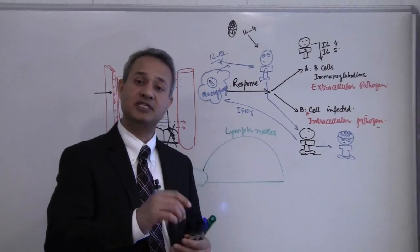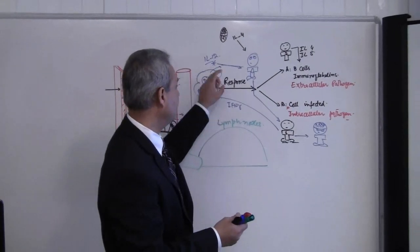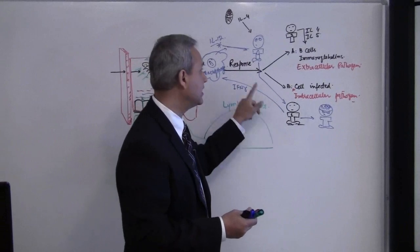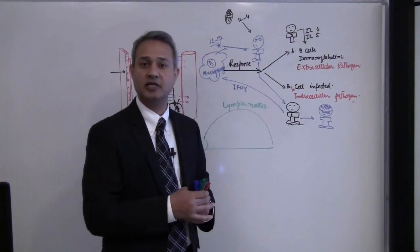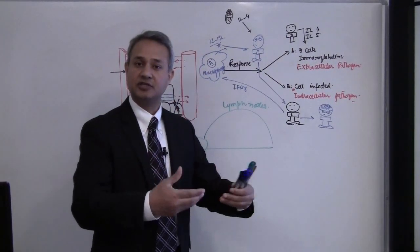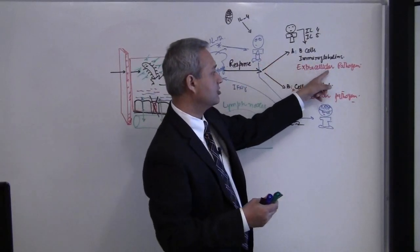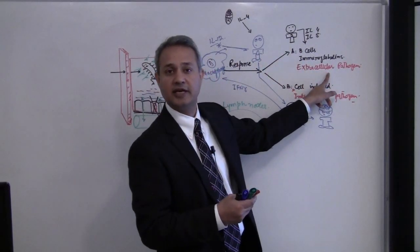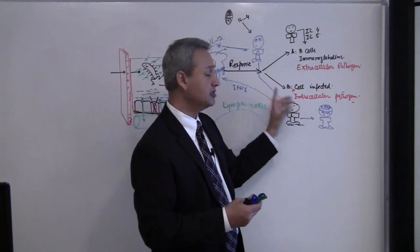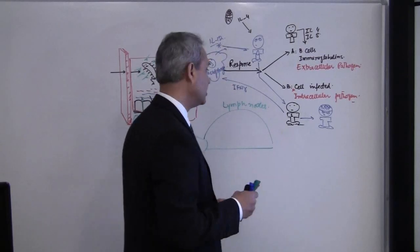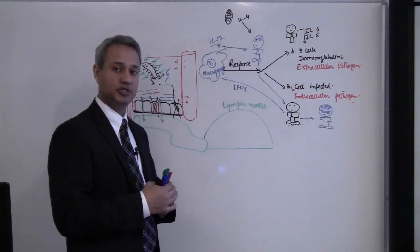Now what could be the mistake? The mistake could be that we want the helper 0 to go helper 1 path, but instead if it went helper 2 path, it is going to kill the reaction. Why? Because now if it goes helper 2 path, we are going to try to find the pathogen in the extracellular tissue while it is an intracellular pathogen, and vice versa.